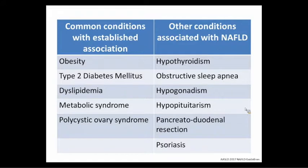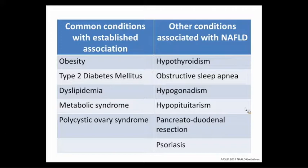Other conditions associated with NAFLD: number one is obesity, then type 2 diabetes, hyperlipidemia, and metabolic syndrome — we consider this the liver manifestation of the metabolic syndrome. Polycystic ovarian syndrome is also associated because of its many metabolic features. Less-studied associations include hypothyroidism, obstructive sleep apnea, hypogonadism, hypopituitarism, pancreatic-duodenal resection, and psoriasis. Pancreatic-duodenal resection relates to bile acid availability and FXR agonism — we're realizing bile acids do much more than break things down; they're actually nutrient signaling molecules with significant feedback loops.